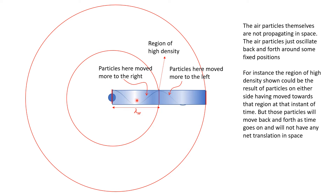The wavefront represents where the maximum density occurs — maximum density here, maximum density here, maximum density here. This is explained in more detail when we talk about sound waves. Here I'm just explaining the idea relevant for the Doppler effect.